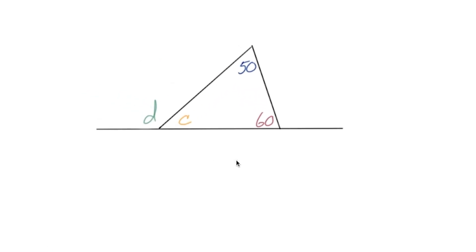Let's say we have a triangle like we have here, and we can see it's labeled. So we got a 50 degree angle, a 60 degree angle, and then we have these C and D angles which we don't know what they are yet.